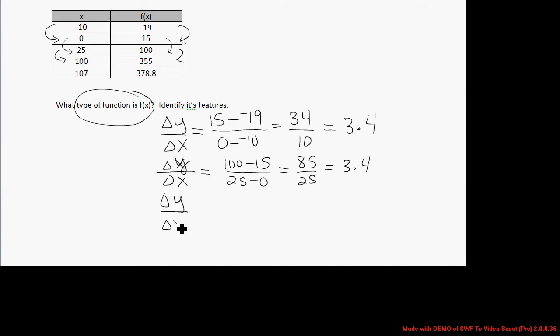And lastly, from point 3 to point 4, 355 minus 100 over 100 minus 25, so we have 255 over 75, which is also 3.4.